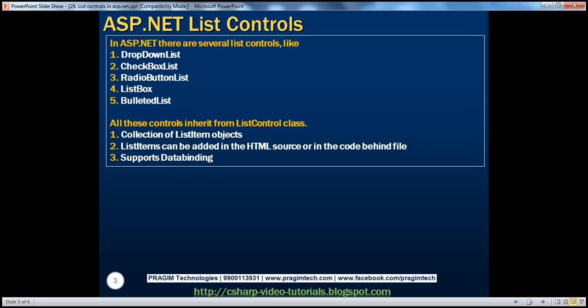In ASP.NET, there are several list controls we have been discussing so far in this video series, like drop-down list, checkbox list, radio button list, list box, and bulleted list. All of these controls inherit from the ListControl class. Because of this, all these controls are actually a collection of ListItem objects. We can add list items to any of these controls in the HTML source at design time, or in the code-behind file programmatically at runtime. And all of them support data binding.